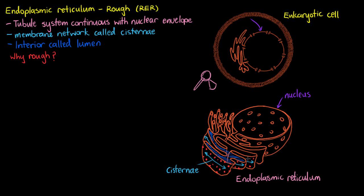If you remember, our ribosomes are the little protein factories of our cell. So they're going to be studding the entire surface of the outer membrane of our rough endoplasmic reticulum. Ribosomes — that's why we call it rough.